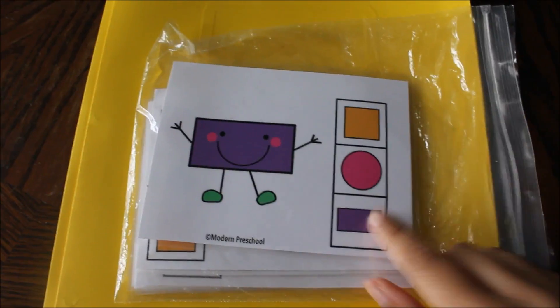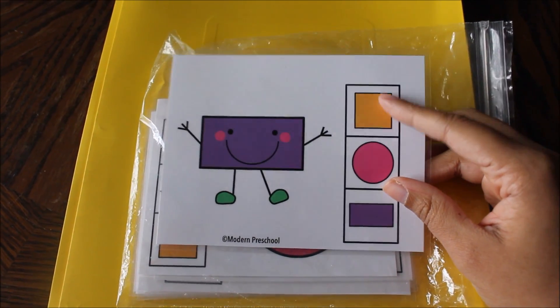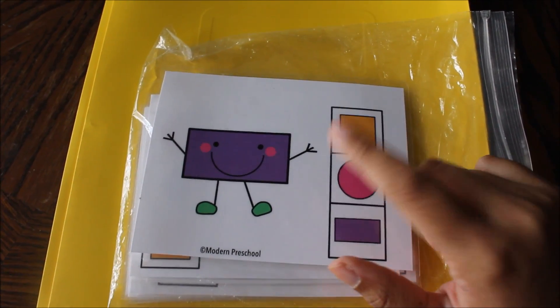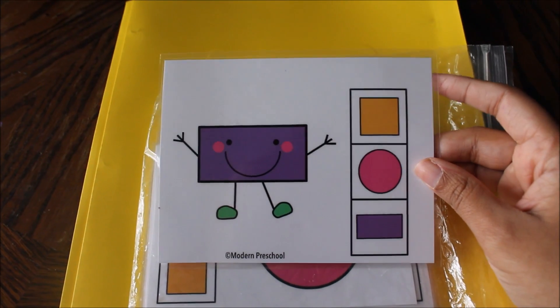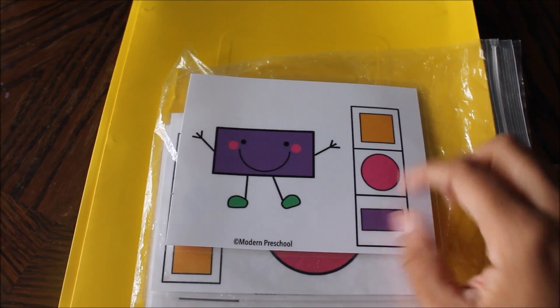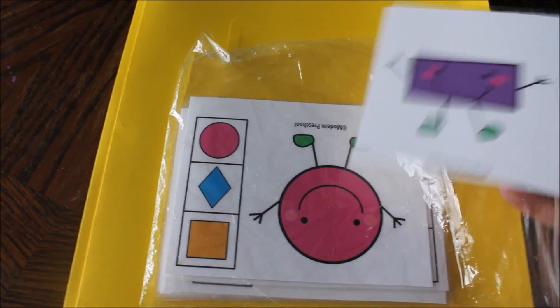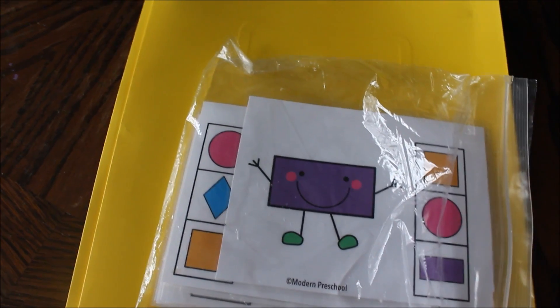Tuesday's is shapes, we are doing these matching printables. This is from modern preschool. So he has to match the shape person to the shape on the side. He's done these before, he hasn't done them in a while, and he usually has trouble with a couple so those are the ones that I'll write down in the daily journal.